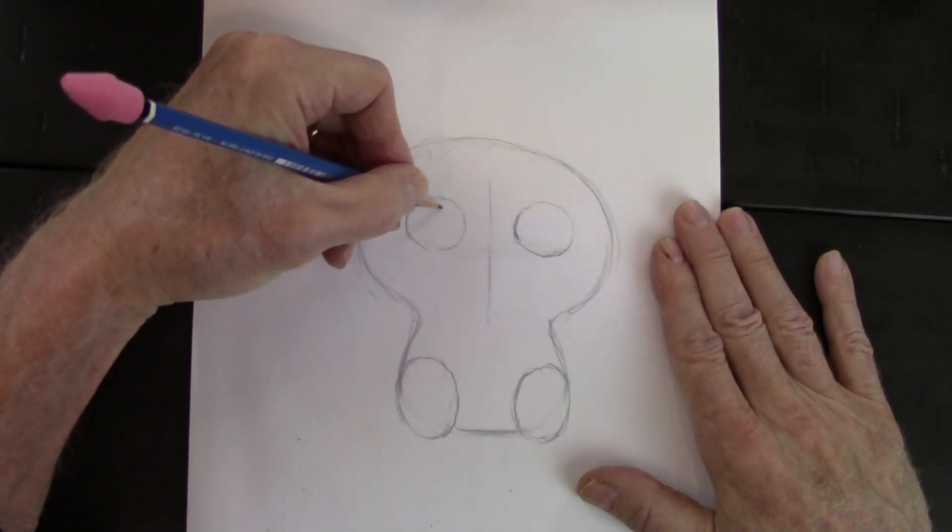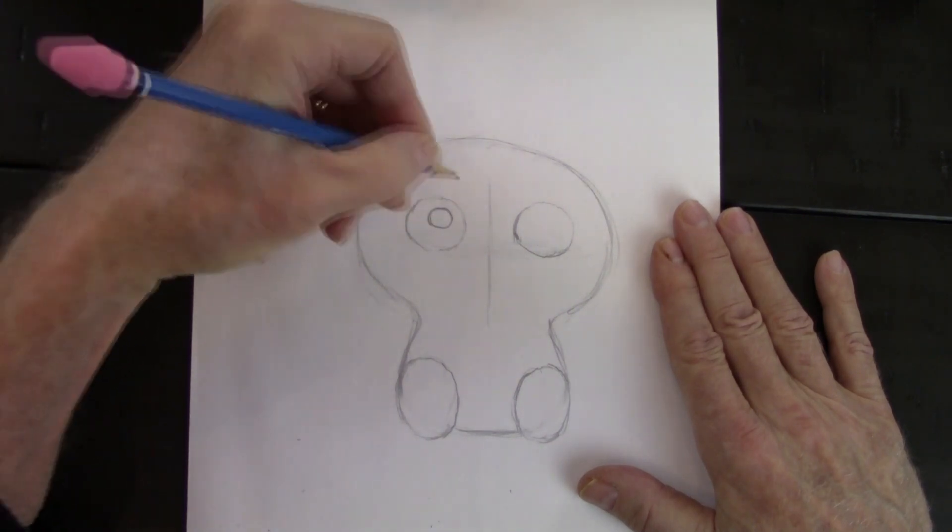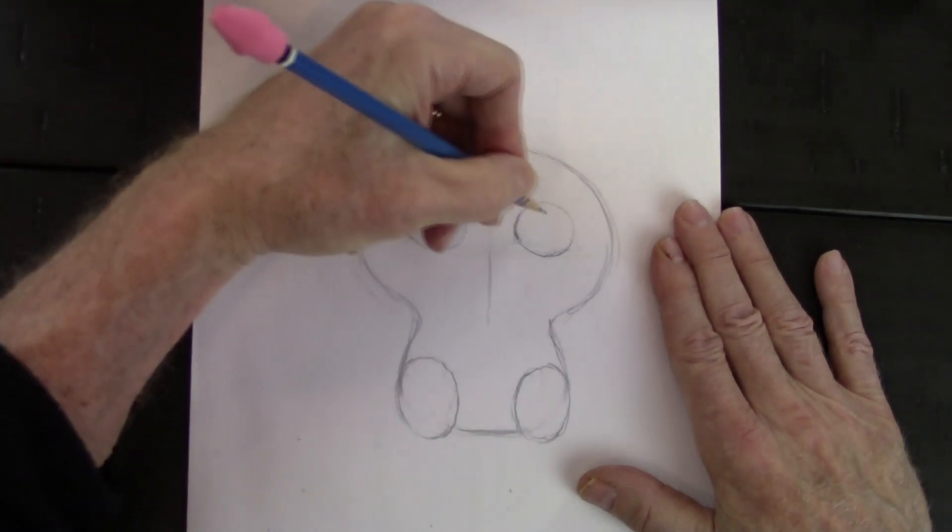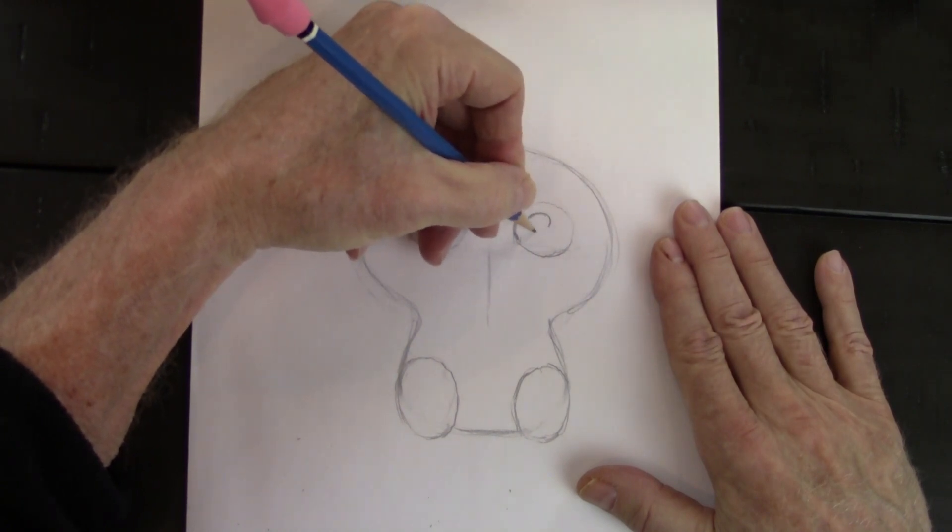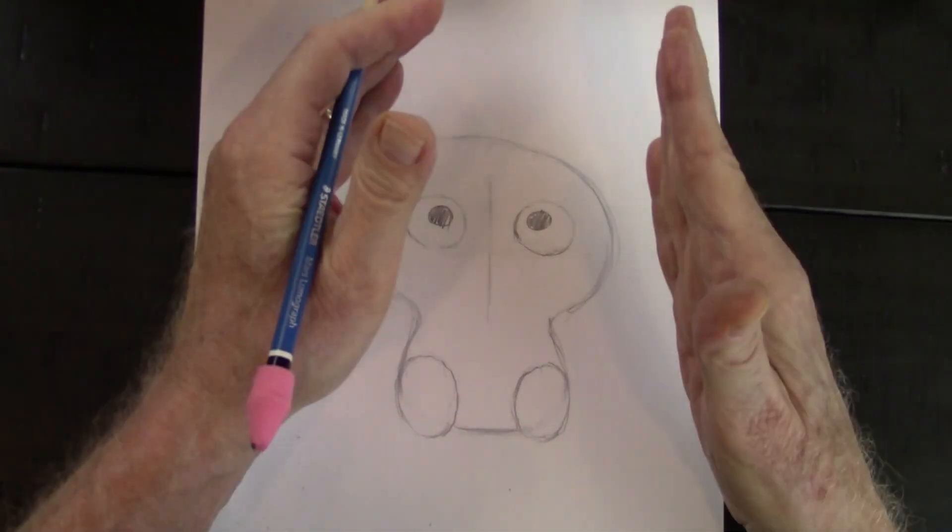Now he's going to be looking up. We're going to give him some kind of ovals for the pupils. And bring it looking up and a little to the middle. When a cartoon character focuses, it's usually slightly toward the center.